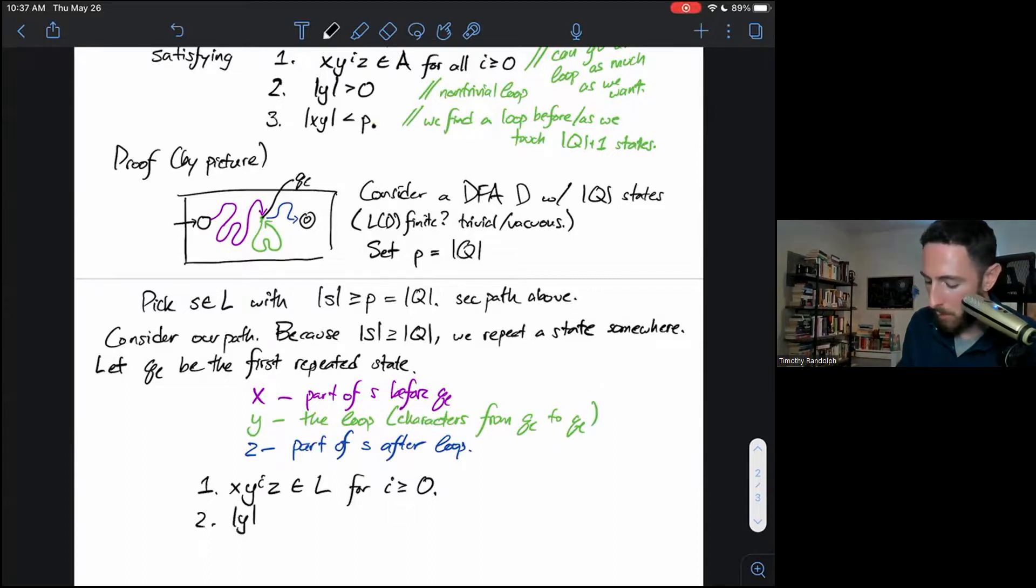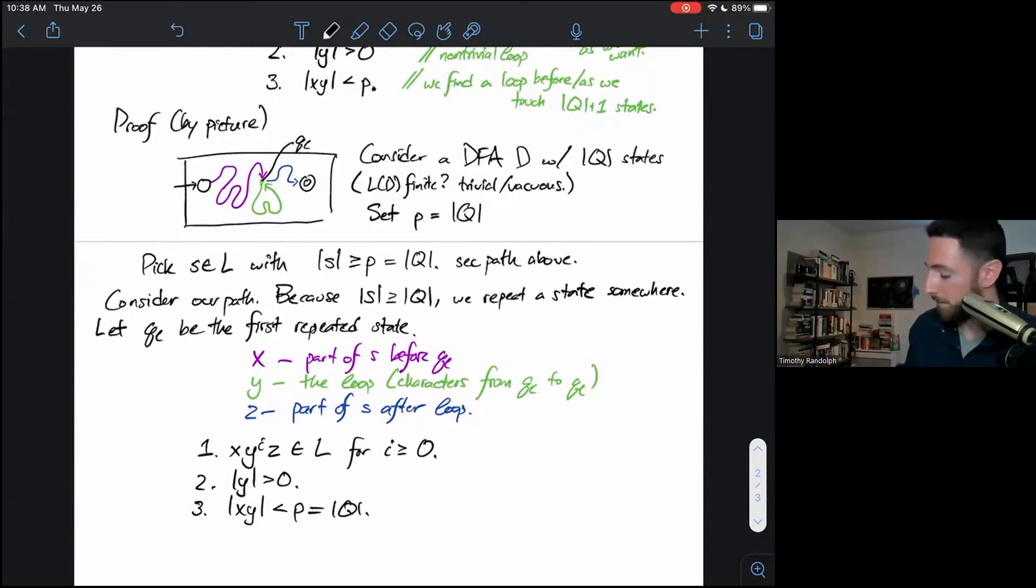Second condition, Y greater than zero. That's also trivial by assumption. We saw QL twice, which means there has to be at least one edge in between the first time we saw it and the second time we saw it. And third, we have X, Y is less than P. So, how long is X, Y? Well, X, Y is all the characters it took to get us from the start state to the second time we saw QL. And as we've previously observed, if we take at most Q transitions, we see Q plus one states. So we have to see our first duplicated state QL, at least by the time we've taken Q transitions. So all three conditions hold, and that is our proof by picture of the pumping lemma.